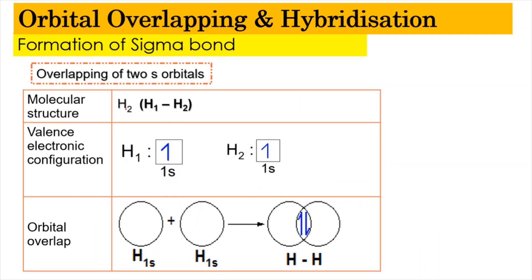Let's look at the example of the hydrogen molecule. Since we are using valence bond theory, we focus on the valence electronic configuration. Hydrogen has one electron, so its configuration is 1s¹. Another hydrogen atom also has 1s¹. When we draw the orbital diagram and overlap the two 1s orbitals together, there is an end-to-end overlap, creating a region of overlap known as the sigma bond, equivalent to H–H, a single bond.